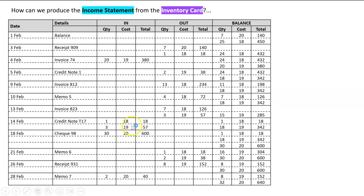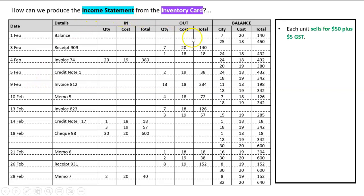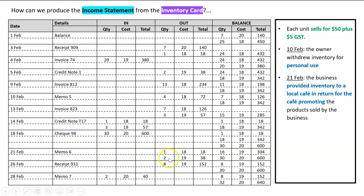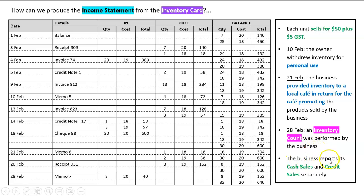We can prepare down to adjusted gross profit based on what we've learned from the inventory card. Given an inventory card, the question tells us each unit sells for $50 plus $5 GST. On the 10th there's a memo in the out column — since it says personal use, that's drawings. On the 21st, memo six units given to a local cafe for promoting our products — that's advertising. The 28th February memo relates to an inventory count, and the business reports its cash sales and credit sales separately.